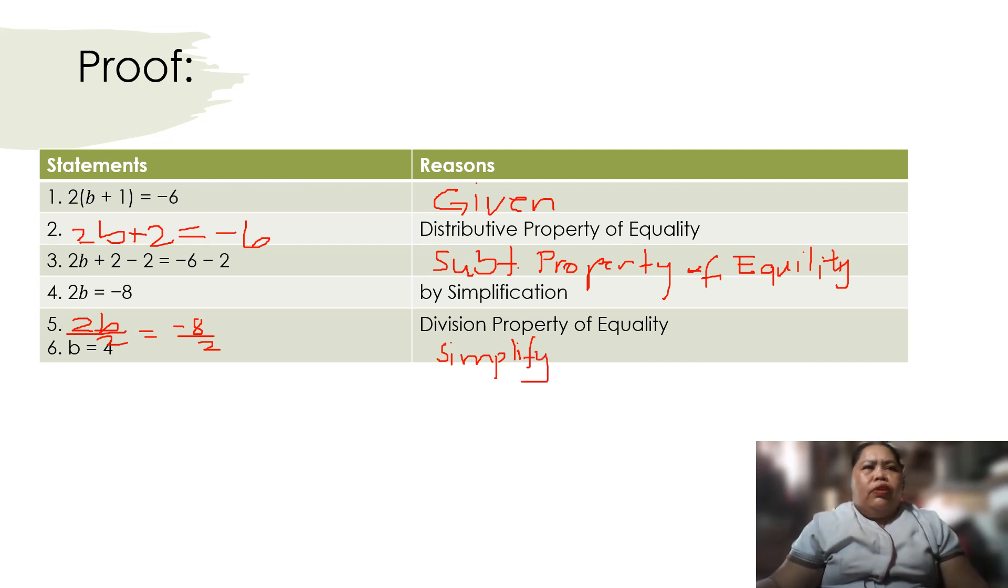So that means our assumption is correct. What are we going to prove here? B is not equal to 4, or b is not equal to 6. So the real answer is negative 4.